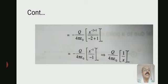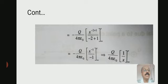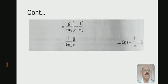Solving the integration: using the formula ∫x^n dx = x^(n+1)/(n+1), so x^(−2) integrates to x^(−2+1)/(−2+1) = x^(−1)/(−1). This gives −q/(4πε₀) × [x⁻¹/(−1)] from ∞ to r, which equals q/(4πε₀) × [1/x] from ∞ to r. Putting in the limits: q/(4πε₀) × (1/r − 1/∞). Since 1/∞ = 0, we get W = (1/4πε₀) × (q/r).